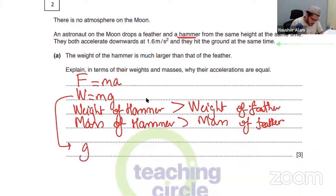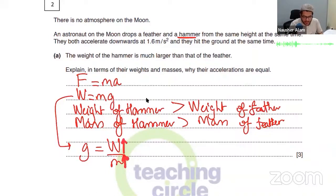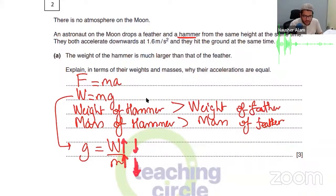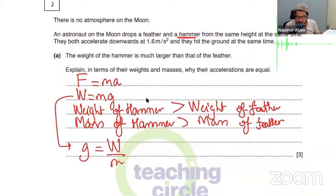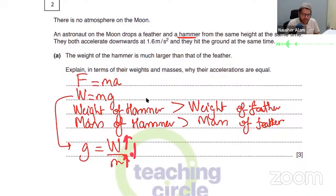If G equals W over M — the hammer's weight is more, but its mass is also more. The feather's weight is less, and its mass is also less. So tell me — would the acceleration due to gravity change, or would it remain the same? As W increases, M increases proportionally.